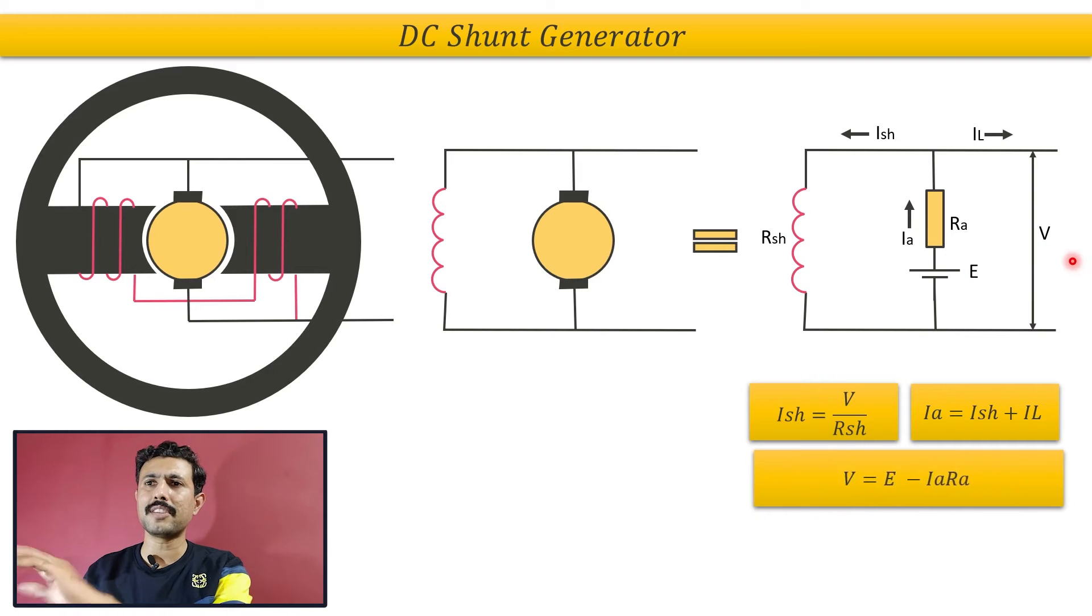So according to this, the equation will be like this: the terminal voltage V is equal to induced EMF E minus IA times RA drop.